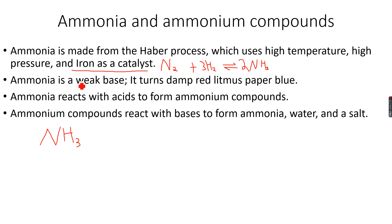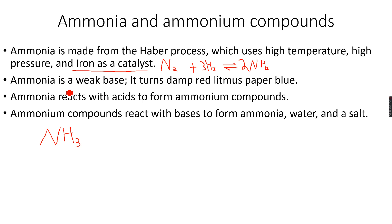Ammonia is a weak base — it turns damp red litmus paper blue. Being a base, it has a pH greater than 7, and being a weak base, it has a relatively low pH for a base, around 10 or so, because it dissociates only partially. That's why it's called a weak base.